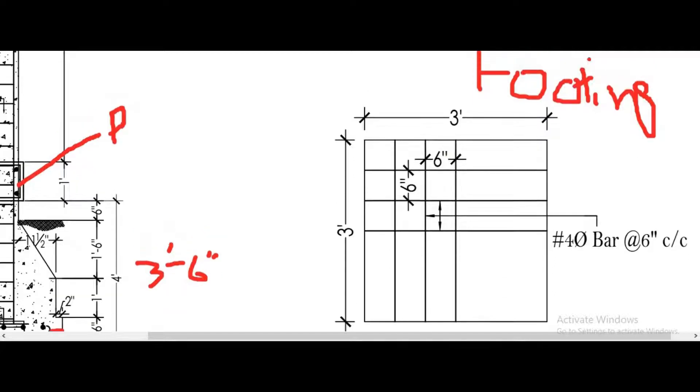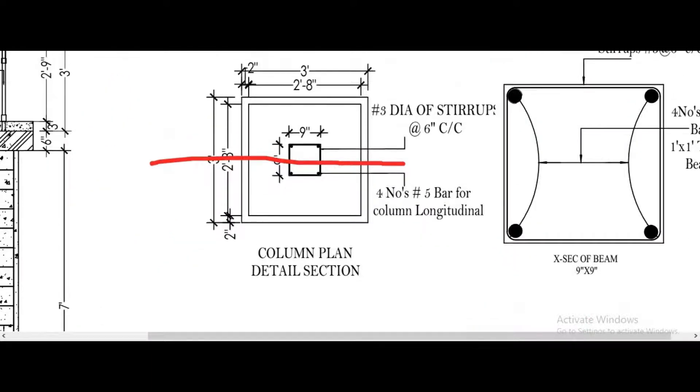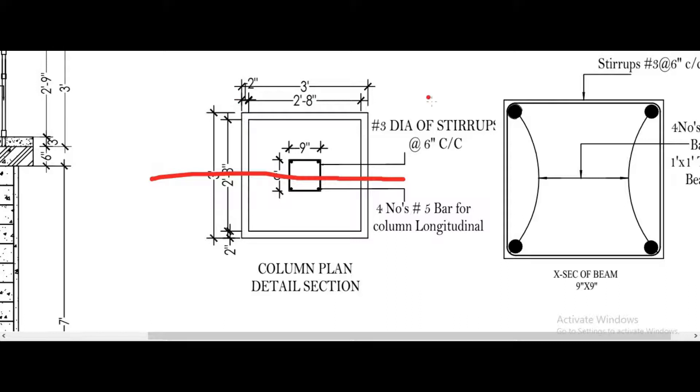Now we will discuss footing reinforcement in detail. The footing is three by three square shape and the reinforcement used in the steel is six inches center to center. The reinforcement used in footing is four number bars and its center to center distance is six inches. Now we will discuss the top view of the column and footing.